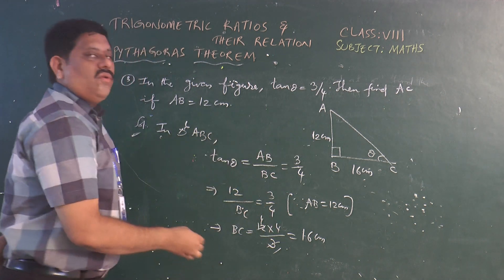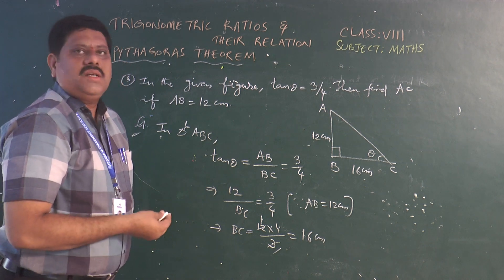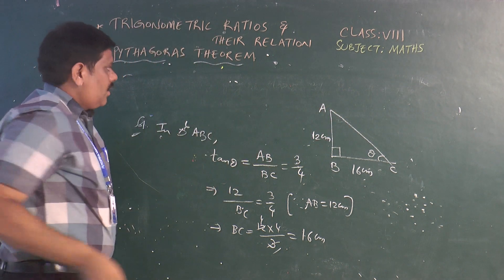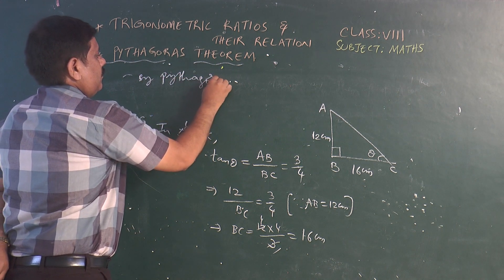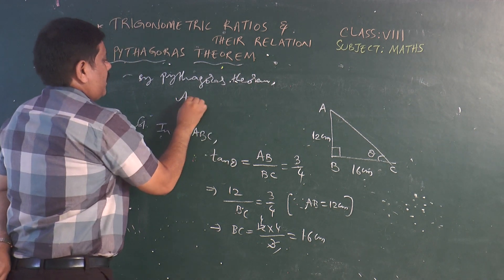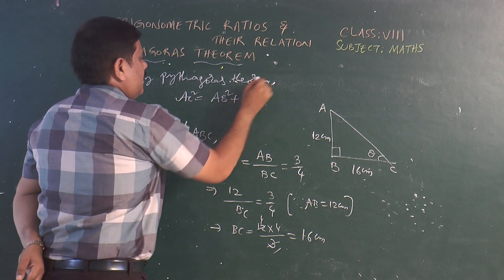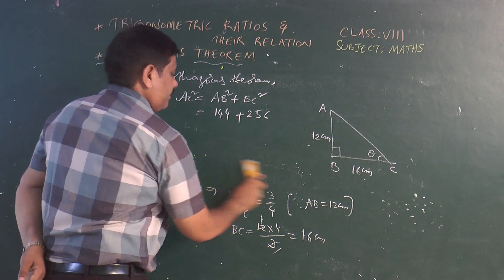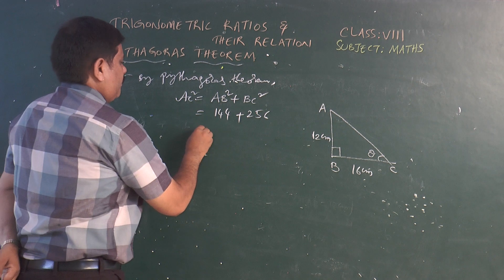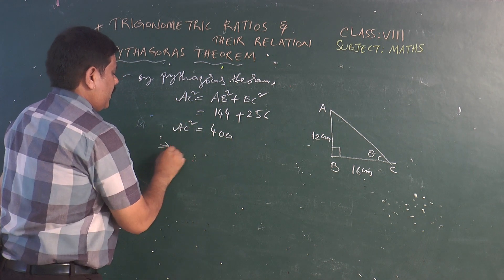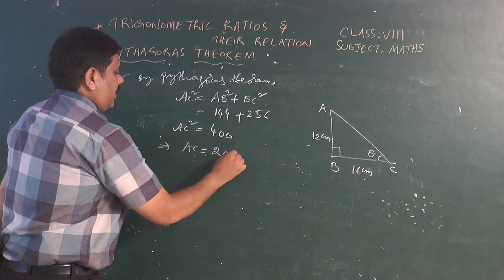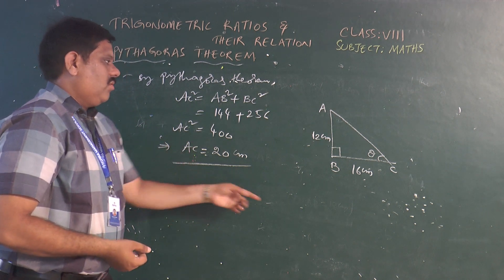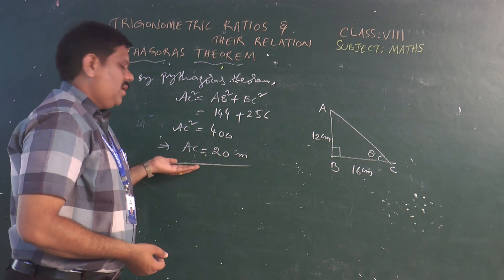Now to find AC, we apply the Pythagorean theorem. AC² = AB² + BC² = 144 + 256 = 400. Therefore AC = √400 = 20 centimeters. So with tan θ = 3/4 and AB = 12 cm, we found BC = 16 cm and then AC = 20 cm.